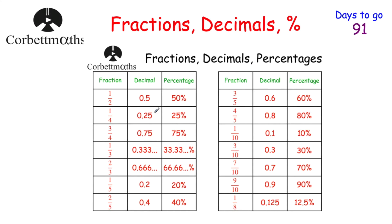These are some of the key fractions, decimals, and percentages I recommend students study for their GCSE maths, so you know that 0.25 is a quarter straight away. I'd recommend writing them in your notebook, on your windows at home, or getting a friend or family member to quiz you on them. If you've got the revision card, this is on one of the revision cards for you.